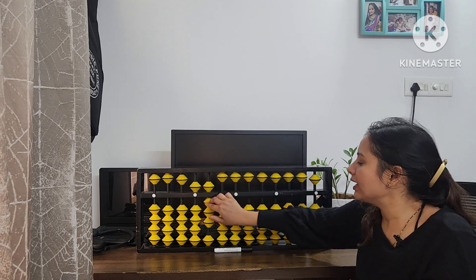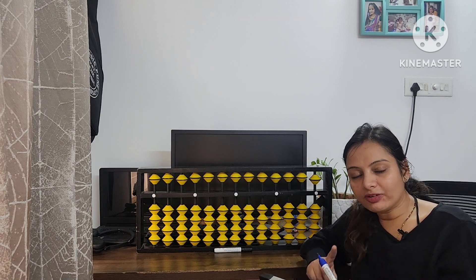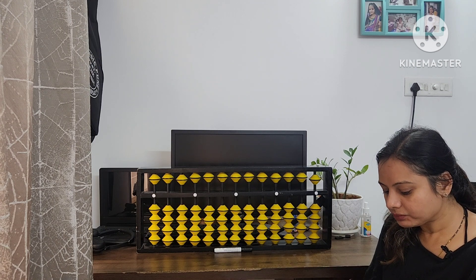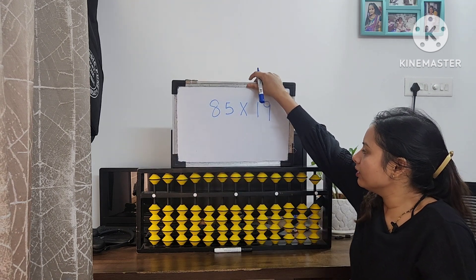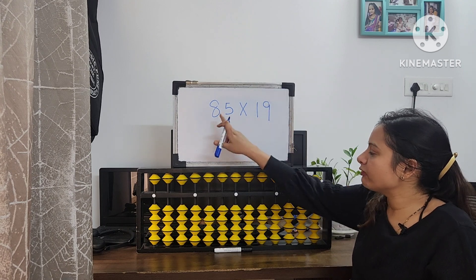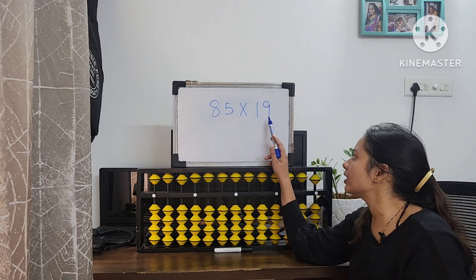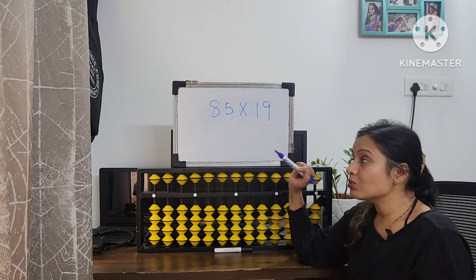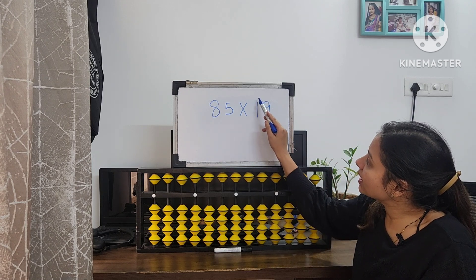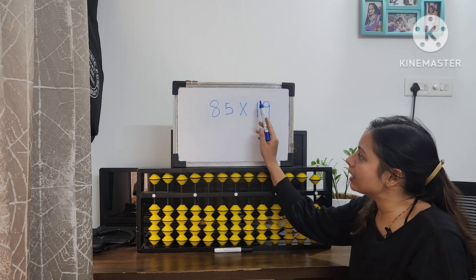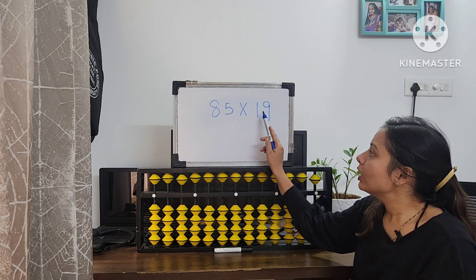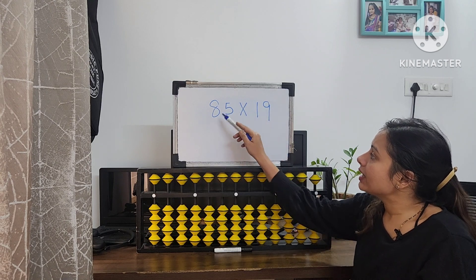Now I'll show how to solve double by double. The question is 85 multiplied by 19. We have 4 digits, so we start from the thousands place. For double-by-double, we first multiply all numbers by 1 (the tens digit of 19): 1 eight is 08, then 1 five is 05. Then we multiply by 9 (the units digit): 9 eights, then 9 fives.